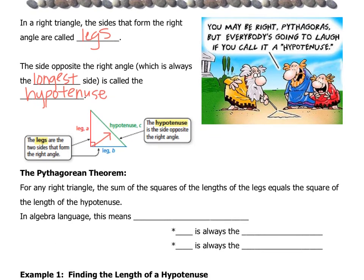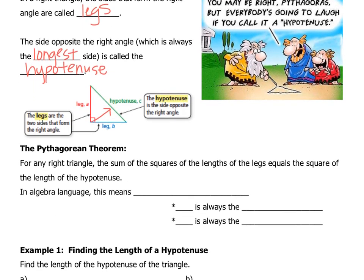Now back in the ancient times of Greek mathematicians, there was this Greek mathematician, Greek philosopher named Pythagoras, and here's what he said. For any right triangle, the sum of the squares of the lengths of the legs equals the square of the length of the hypotenuse.